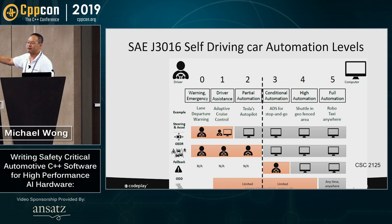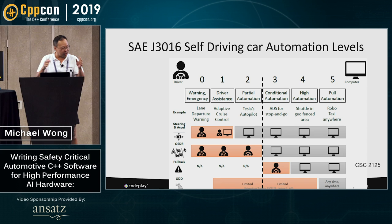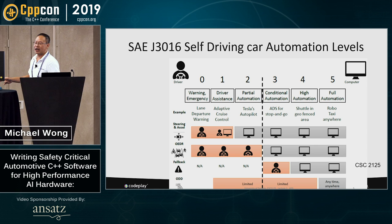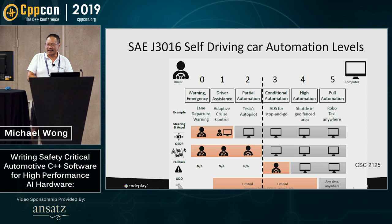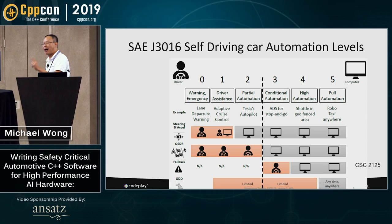Level zero, one, and two still need some sort of human interaction — that fallback where the computer at some point is going to give up and you take over. Past the dash mark is full automation; there's no fallback. The fallback is the computer itself. Except there's one case in level three where there's a conditional automation and the operating domain environment has one fallback.